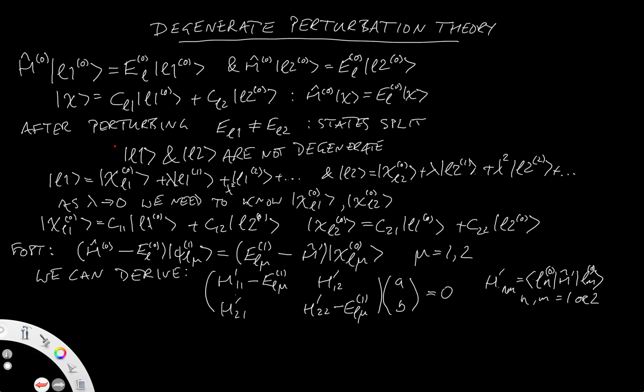We then find an equation, a matrix equation. We solve this matrix equation for E_L_mu of 1. And for the doubly degenerate case, there are two solutions because it's a quadratic. And then we substitute in and solve for C11, C12, and solve for C11, C12, C21, and C22.